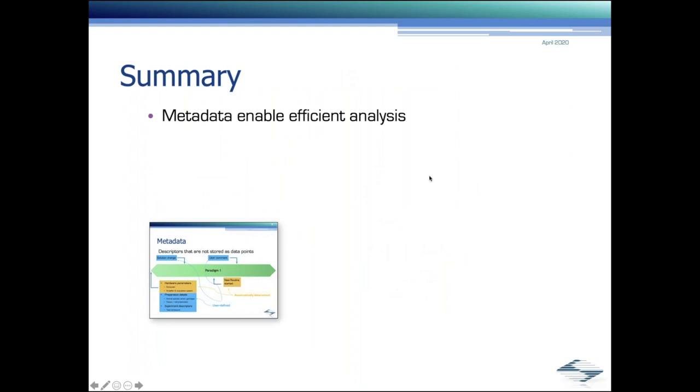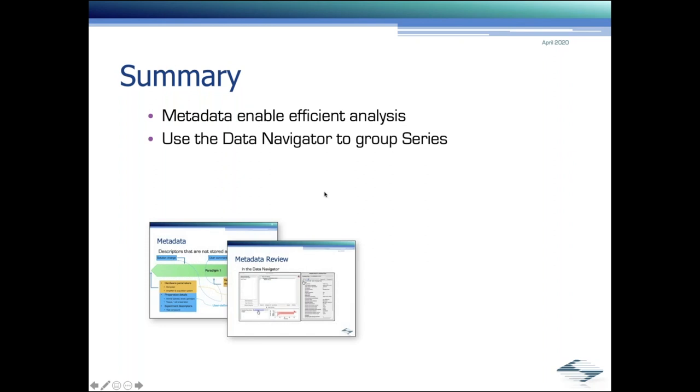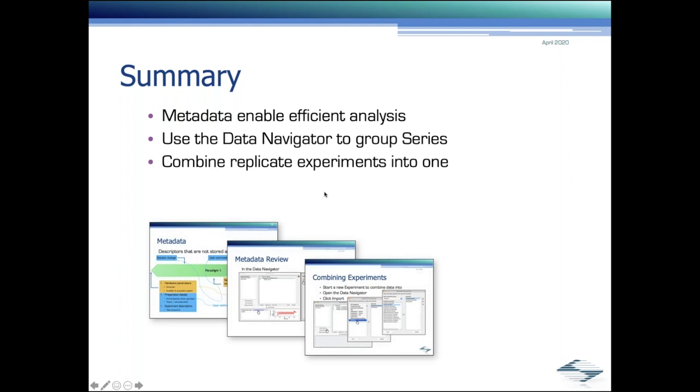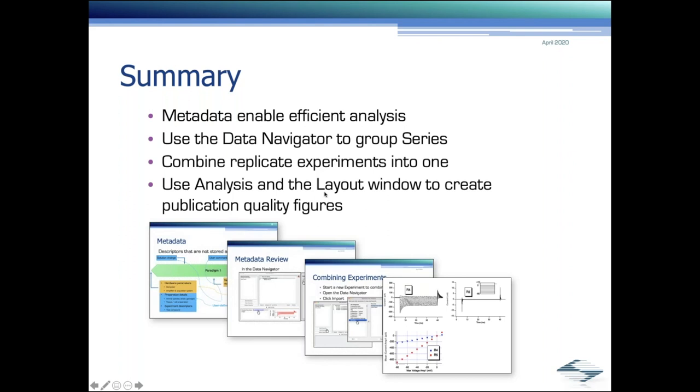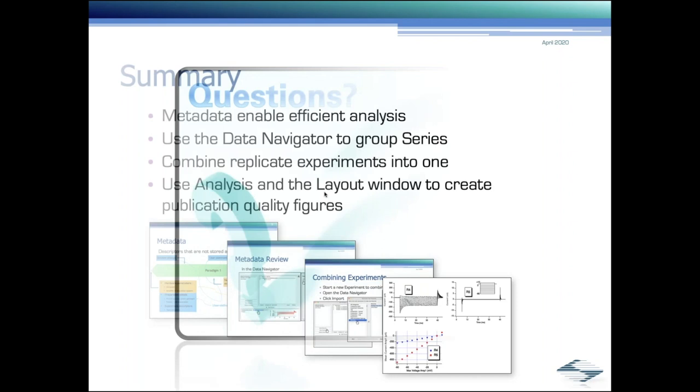So let me summarize what I told you today. Metadata enable the efficient analysis. They enable it by giving you parameters that you can sort your data by. Metadata have value in being recorded together with the signal data in one electronic file. It's not a paper journal that gets stripped of your electronic data at some point. You can use the data navigator to group series according to parameters you're interested in. You can combine replicate experiments into one. And I showed you how to use the analysis in the layout window to create publication quality figures. And with that, let's start the Q&A session.